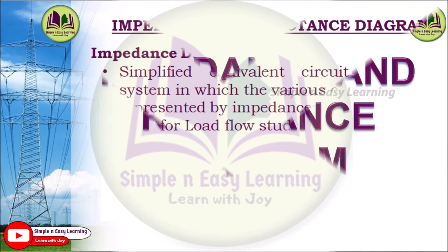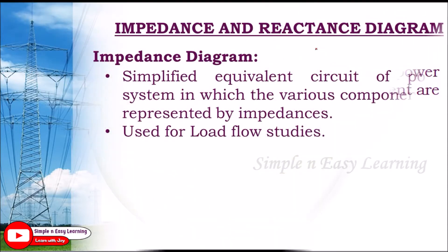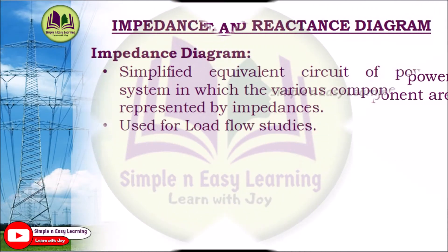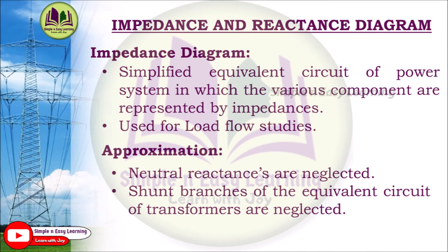An impedance diagram is a simplified equivalent circuit of a power system in which the various components are represented by impedances. The impedances consist of resistance and reactance, represented as R plus Jx, giving impedance Z. We represent a single line diagram in terms of an impedance diagram, where x represents inductive or capacitive reactance. This impedance diagram is used for load flow studies, also called power flow studies.